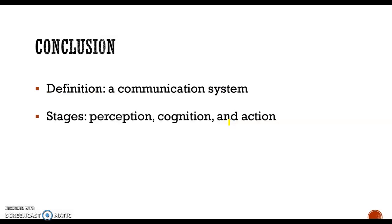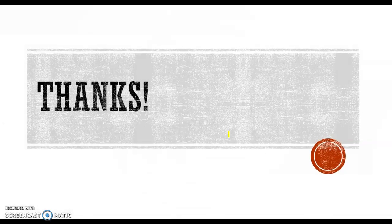Finally, let's roll through the main points one more time. Today we talked about human information processing, which lies at the heart of human performance. It is a way of regarding humans as a communication system — we get input from the environment, interact with the environment and resources, and finally make output back to the environment. There are three main stages: perception, cognition, and action, which correspond respectively to the three key parts: input, decision-making, and output. That's all about this presentation. Thanks very much for your time.